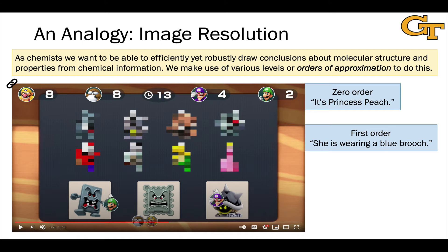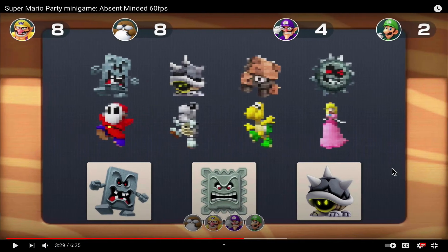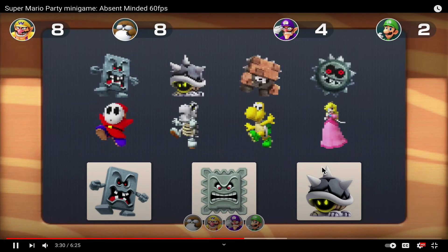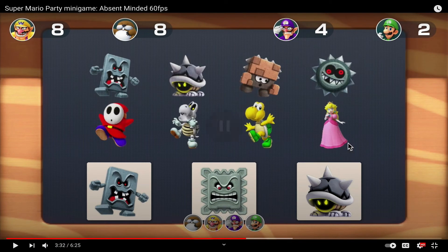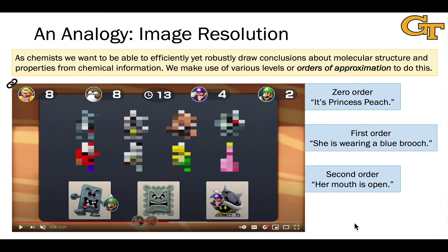Say we wanted even more detailed information. We need to go to even higher resolution and add on a second order term or relax our approximations even further. When I do that and get to the highest resolution image possible, now we can draw more conclusions. We can say for example that her mouth is open. We couldn't even see her mouth in the first order and zero order images, but in the second order image we can now draw this conclusion.